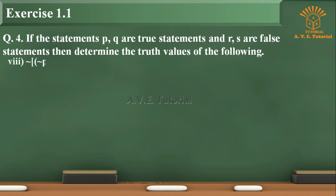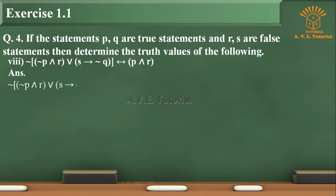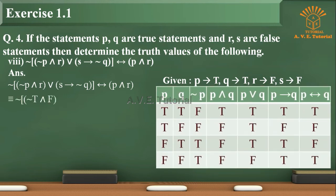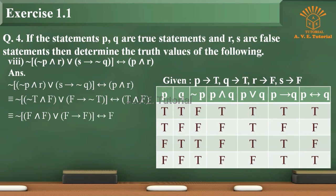Sub-question 8: negation of (negation of P and R or S) implies (negation of Q biconditional (P and R)). Given P is true, Q is true, R is false, S is false. This is equivalent to negation of (negation of T and F or F) implies (negation of T biconditional (T and F)), which is equivalent to negation of (F or F) implies (F biconditional F), which is equivalent to negation of F implies F biconditional F, which is equivalent to T biconditional F, which is equivalent to T.